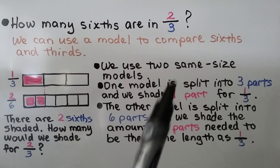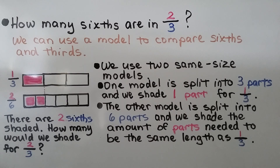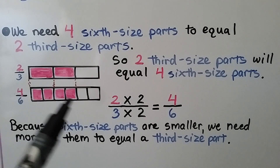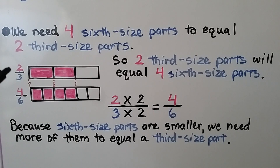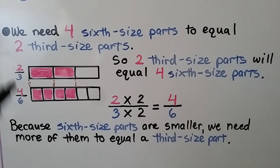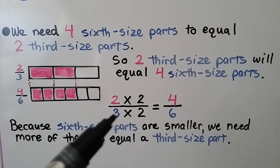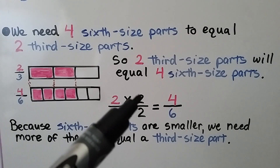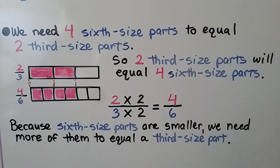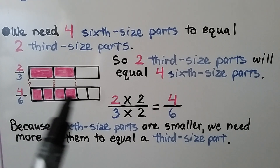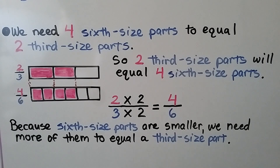So how many would we shade for two-thirds? We need four sixth-size parts to equal two third-size parts. So two-thirds equals four-sixths. We can take two-thirds and multiply the numerator and denominator by the same number, two. Two times two is four — our new numerator is four. Three times two is six — our new fraction is four-sixths. Because sixth-size parts are smaller, we need more of them to equal third-size parts. For each third-size part, we need two sixth-size parts.